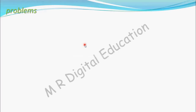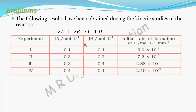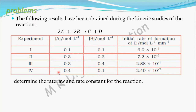Let's see a problem to determine rate law and rate constant. The following results have been obtained during the kinetic studies of the reaction: 2A + 2B gives C + D. From the given table, we have to determine the rate law and rate constant for the reaction. The result of that experiment is given in the form of a table.